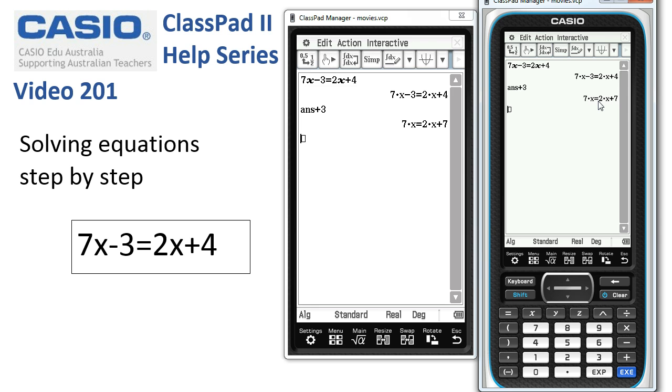The second thing we're going to do is subtract 2x from both sides. So again, we'll hit the subtract key. Answer shows up, 2x, and execute. And our equation's well on the way to being solved.